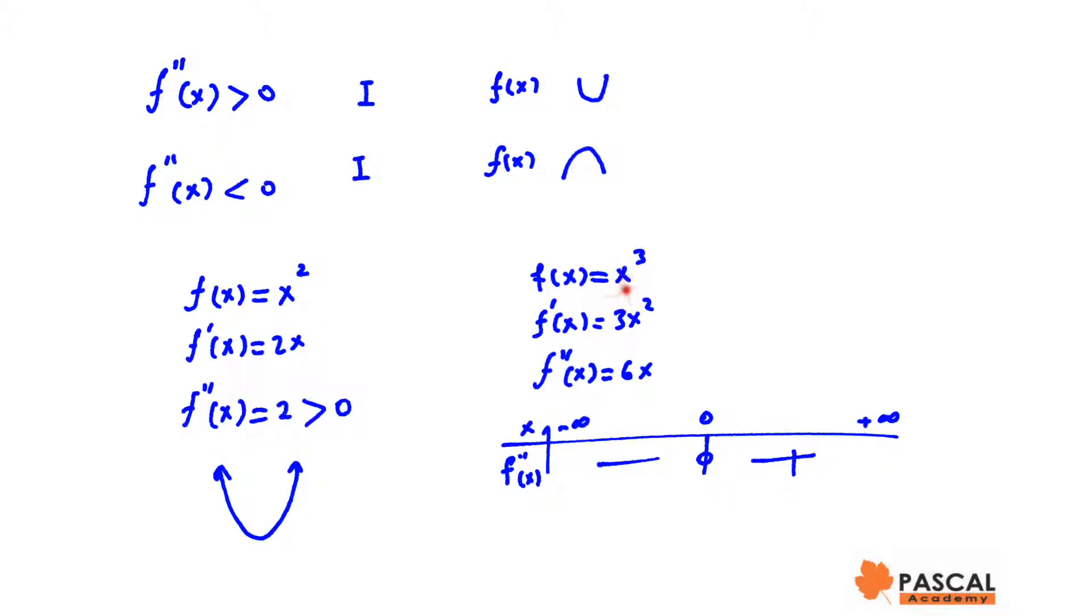Let's look at f of x equals x³. f prime of x is 3x², and f double prime of x is 6x. f double prime is negative when x is negative, and if x is positive, f double prime is positive. Therefore, the function is concave down when x is less than 0, concave up when x is greater than 0, and (0,0) is the point of inflection of f of x equals x³.